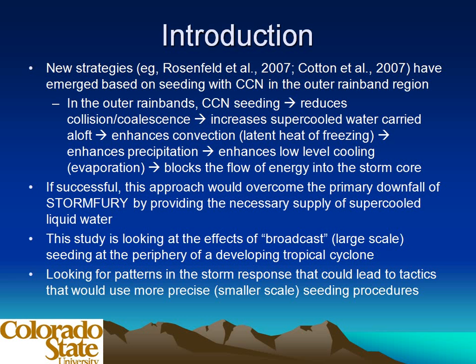Some new strategies have emerged. Examples include work that Cotton and Rosenfeld have done, based on seeding with CCN in the outer rain band region. The idea is that in the outer rain bands, if you increase CCN at lower levels, this reduces the collision-coalescence process, making more cloud droplets available. If those intersect with updrafts in the convection, they get lifted up to where they can become supercooled and freeze, releasing latent heat, enhancing updrafts and convection, and getting the cold rain process growing. The ensuing precipitation will, through evaporative processes, increase the cold pool strength in that region, blocking the flow of energy into the storm core and reducing its intensity.